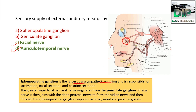The sphenopalatine ganglion is the largest parasympathetic ganglion responsible for lacrimation, nasal secretion, and palatine secretion. The geniculate ganglion gives the greater superficial petrosal nerve, which joins the deep petrosal nerve to form the Vidian nerve, which then passes through the sphenopalatine ganglion to supply the lacrimal, nasal, and palate glands.